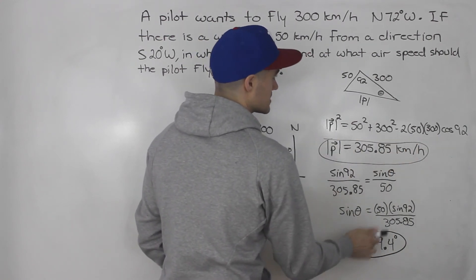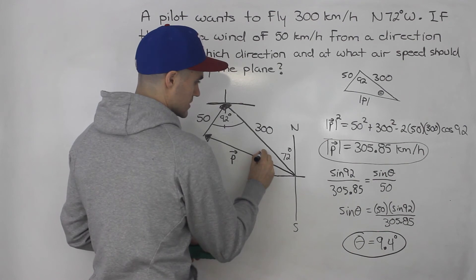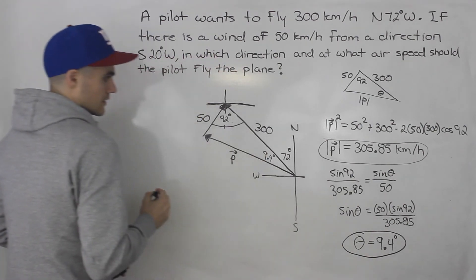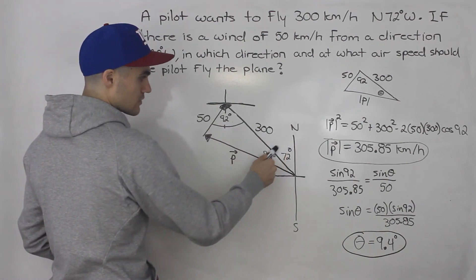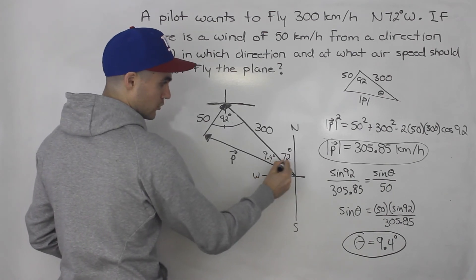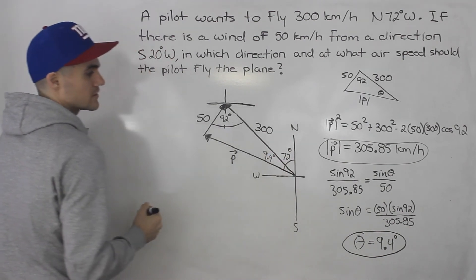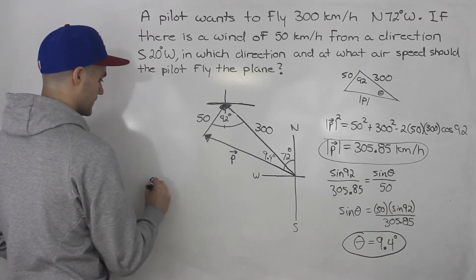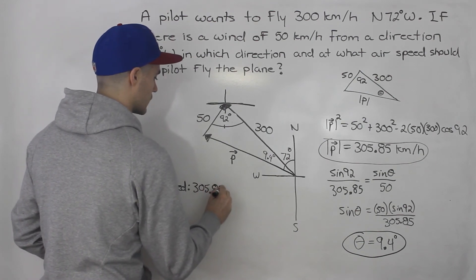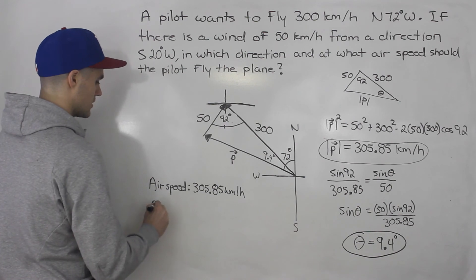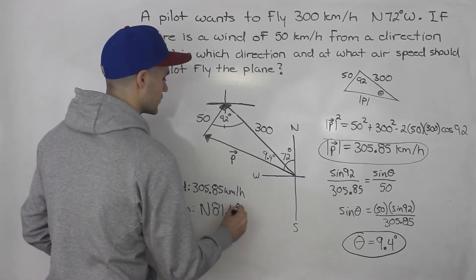So 305.85 is the airspeed, and theta is 9.4 degrees in the triangle. Going back to the diagram, this theta is 9.4 degrees. Notice we can now answer the direction as well. The resultant is north 72 degrees west, so if we add 9.4 to 72, that gives us 81.4 degrees. So the direction of the plane is north 81.4 degrees west. The final answers are: airspeed 305.85 kilometers per hour, and direction north 81.4 degrees west.